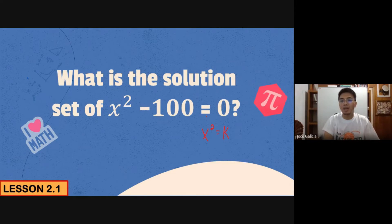Now, to solve this equation, we have to transpose negative 100 to the right side. So the first step will be: x² copy lang natin class, then copy the equal sign, copy zero, but from negative 100, we transpose it to the other side. This becomes positive 100.